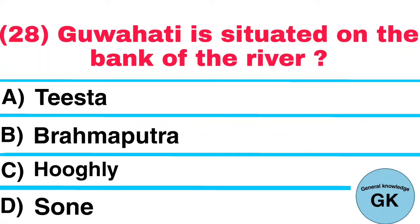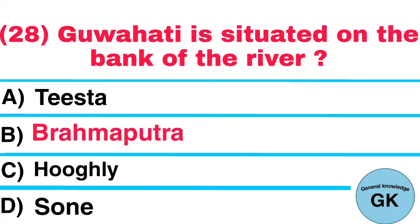Question number 28. Guwahati is situated on the bank of the river: A. Teesta, B. Brahmaputra, C. Kulsi. Answer: Brahmaputra.